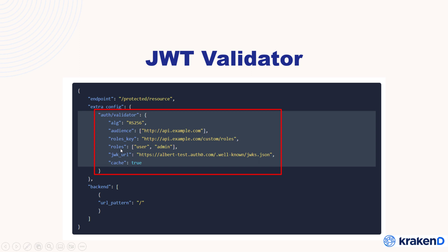There is also a roles field — how many roles you need to define. Here is an example: user and admin, so two roles are acting on that specific endpoint. There is also a JWK URL, which as already mentioned points to the symmetric file that needs to validate based on key ID with a secret key that is base64 encoded. There is also a cache option — if cache is true, KrakenD will validate the request from cache.